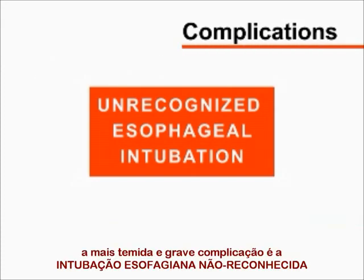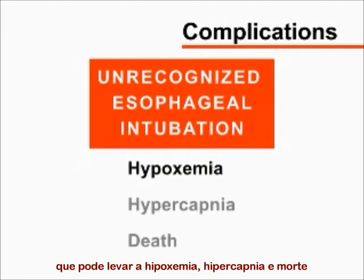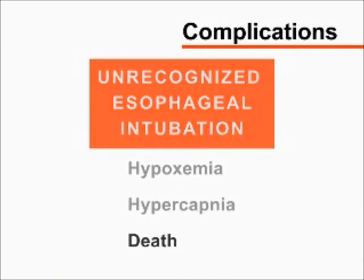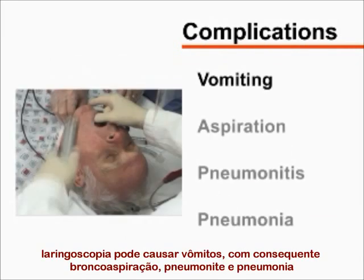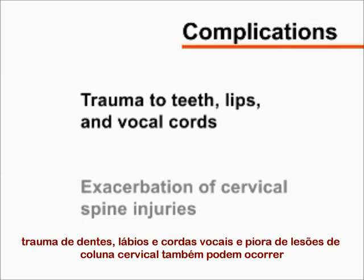The most serious complication of endotracheal intubation is unrecognized esophageal intubation, which may lead to hypoxemia, hypercapnia, and death. Laryngoscopy can provoke vomiting and aspiration of gastric contents causing pneumonitis or pneumonia. Additional complications include bradycardia, laryngospasm, bronchospasm, and apnea due to pharyngeal stimulation. Trauma to teeth, lips, vocal cords, and exacerbation of cervical spine injuries can also occur.